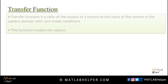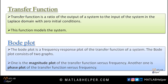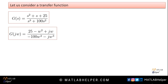First, what is a transfer function? A transfer function is a ratio of the output of a system to the input of the system in the Laplace domain with zero initial conditions. This transfer function models the system — any system can be modeled using it. Next, the Bode plot is one of the frequency response plots of the transfer function. It contains two graphs: one is the magnitude plot in decibels versus frequency, and another is the phase plot in degrees versus frequency. Let us consider the transfer function g(s) = (s² + s + 25) / (s + 100s²).